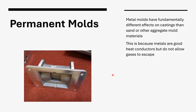Permanent molds have fundamentally different effects on the casting process compared to sand or other aggregate mold materials. Because they're made of metals, they are very good thermal conductors, and they also do not allow gases to escape — those are the two key reasons why they have different effects on casting.